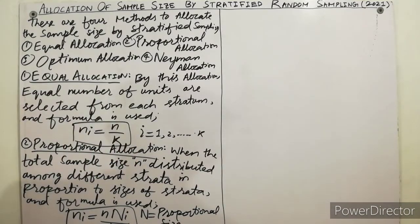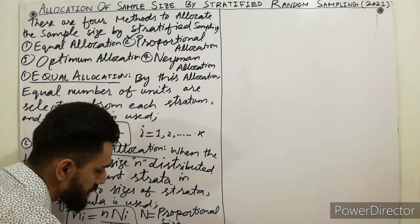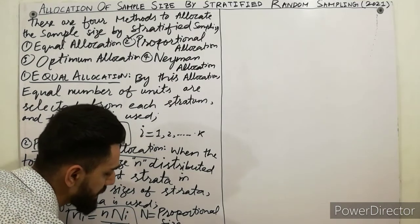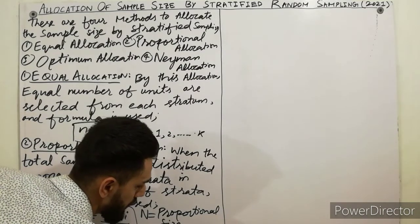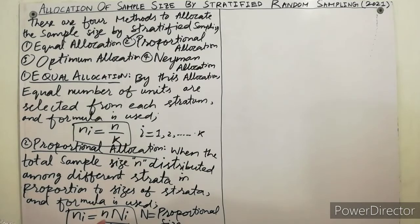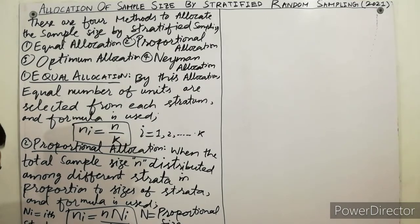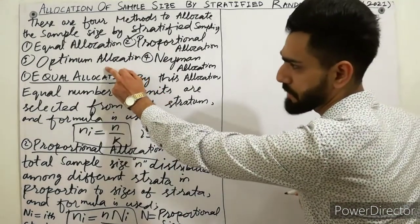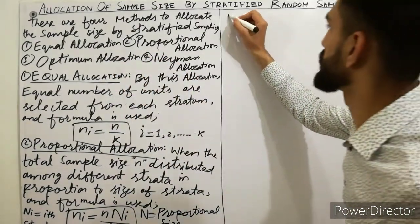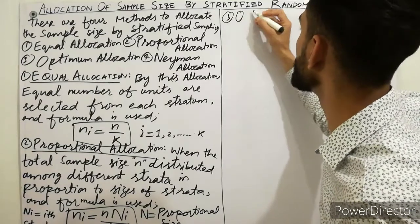In the formula for proportional allocation: small n is the total sample size, N_i is the i-th stratum size, and capital N is the total population size. Now moving to the third method: optimum allocation.